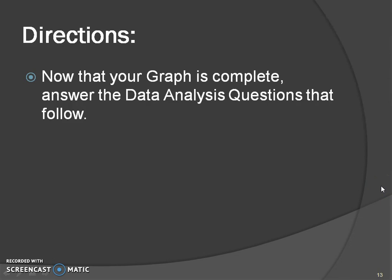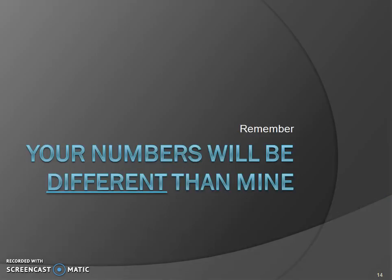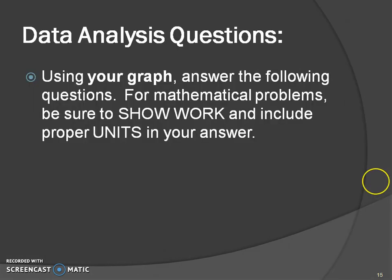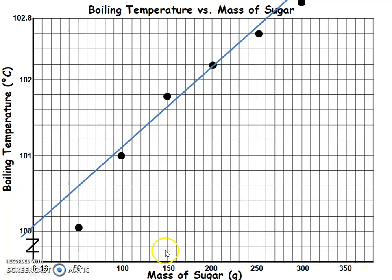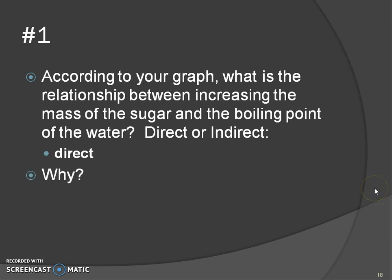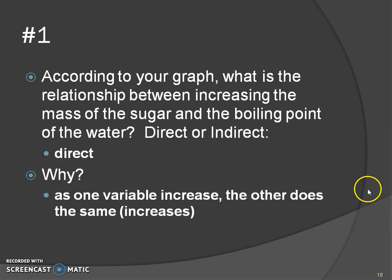Now that we've completed the graph, let's analyze some of these questions. Your numbers will probably be different than mine, so use your numbers, not mine. Question one: as the mass of sugar increases, the boiling point also increases — that's called a direct relationship because they do the same thing. Your answer should be something along those lines.